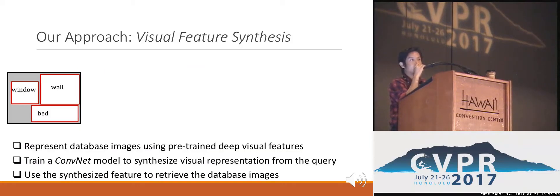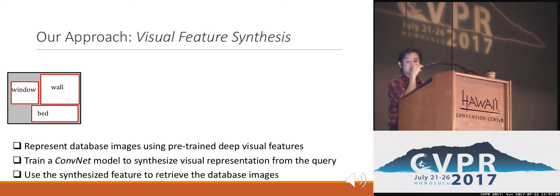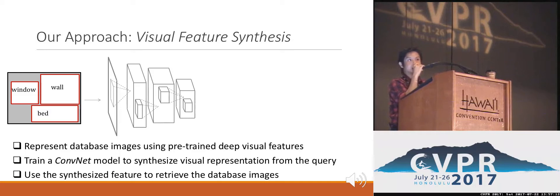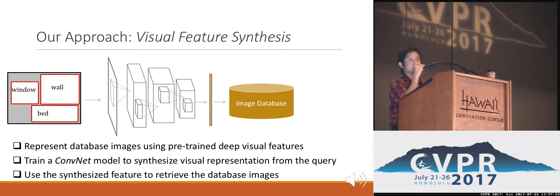The challenge is how to represent the user query and the database images in the same space of representation so that we can do the search. To address that problem, we follow a feature synthesis approach. Our method first represents the database images using pre-trained deep visual features. The key idea is to train a feature synthesis model to generate the appropriate visual feature from the user input query, and then use the synthesized feature to retrieve the relevant images from the database.